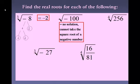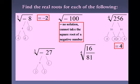On the fourth root of 256, we need 4 of the same number — we have 4 fours, so 4 is our answer. On the cube root of negative 27, we need 3 of the same number, we have 3 threes, and it's going to be negative 3 because of the negative underneath the cube root. For the fourth root of 16 over 81, break that down — we need 4 of the same number, and we have 4 of the same number, which gives us 2 thirds, so 2 thirds is our answer.